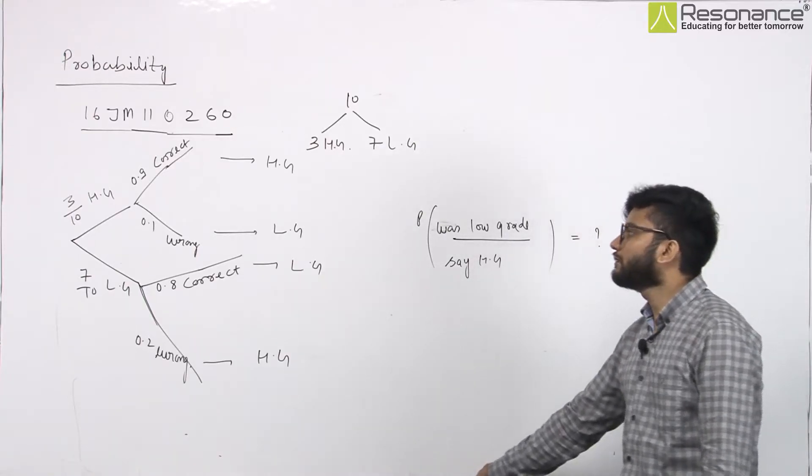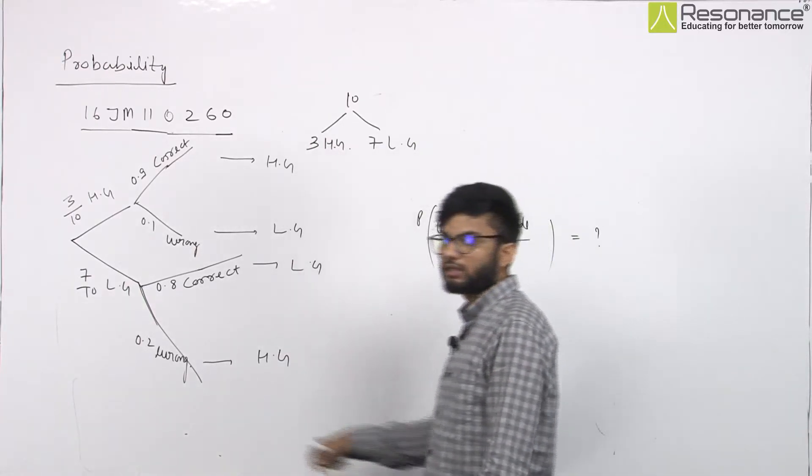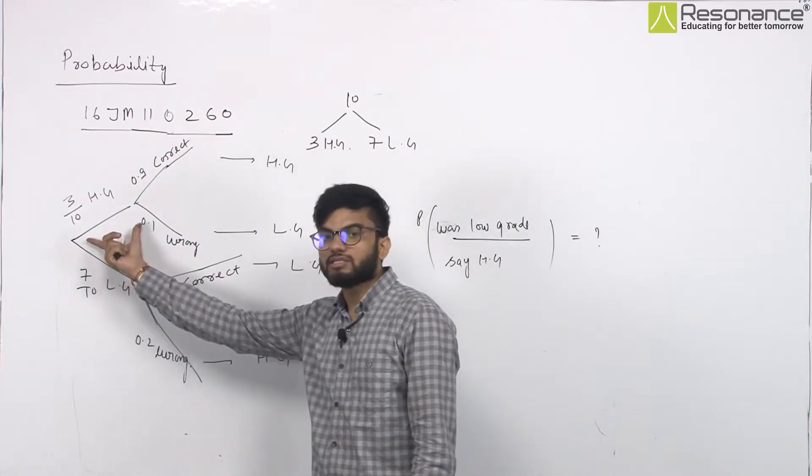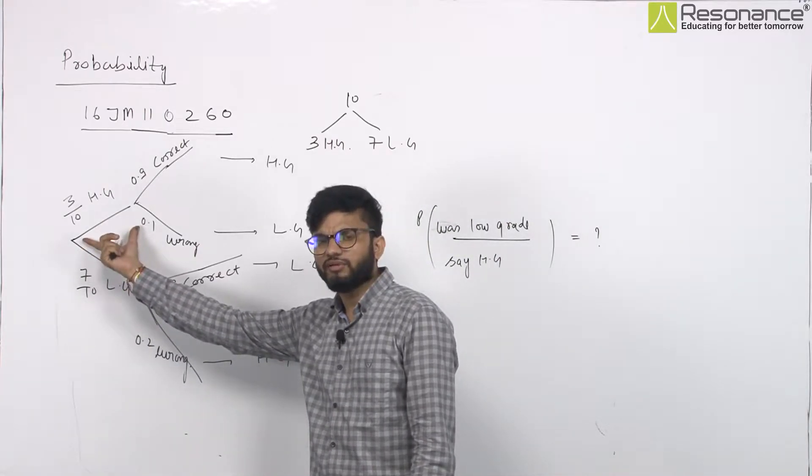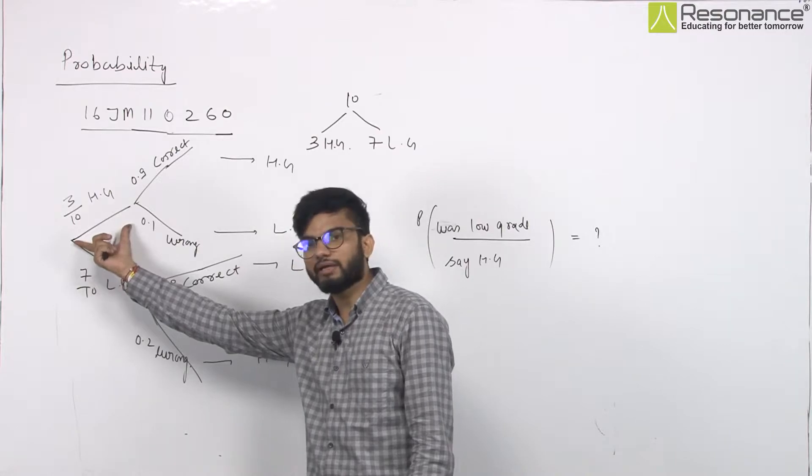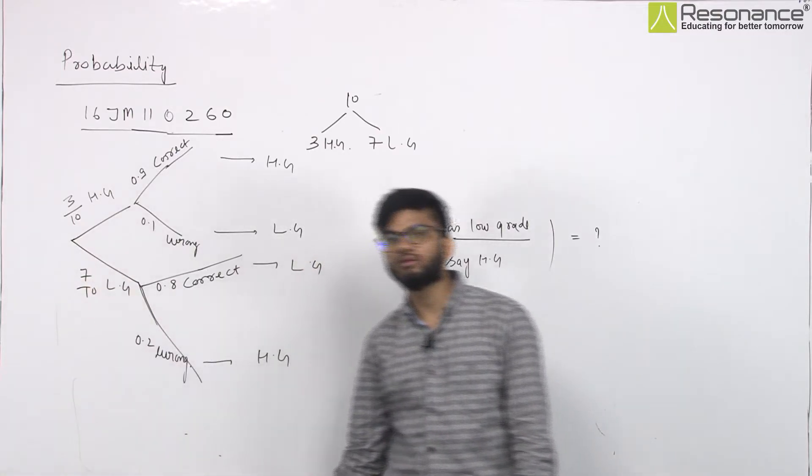So, if you have asked this question, keep some data from this way. If you have a T curve, three curves are high-grade and seven are low-grade.